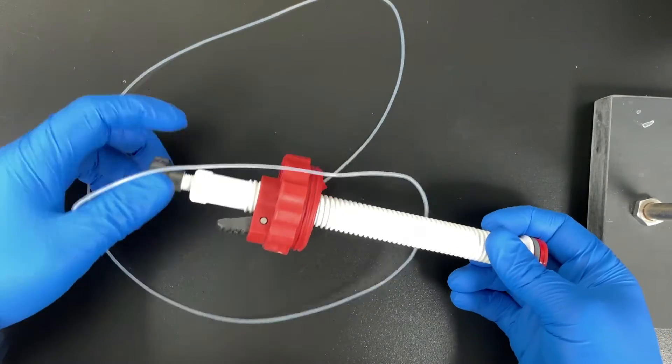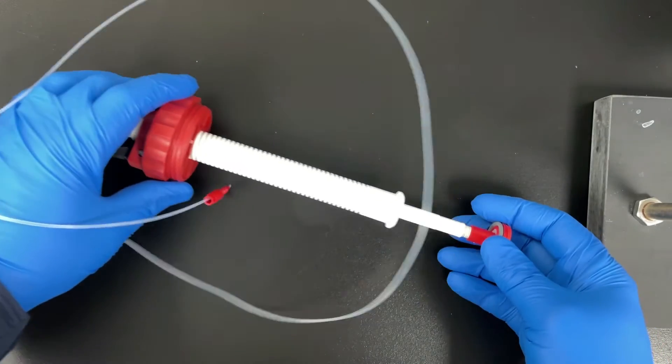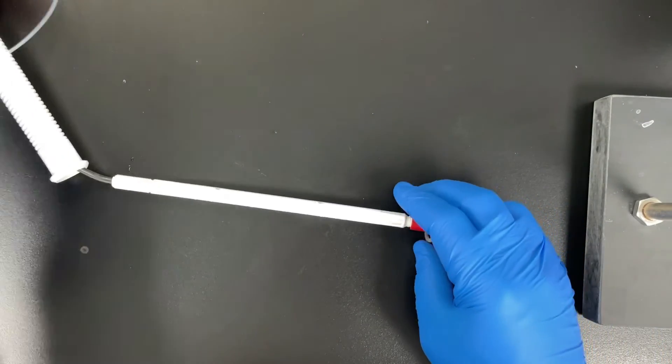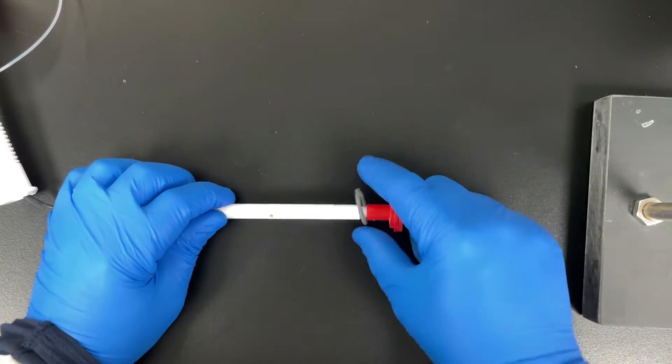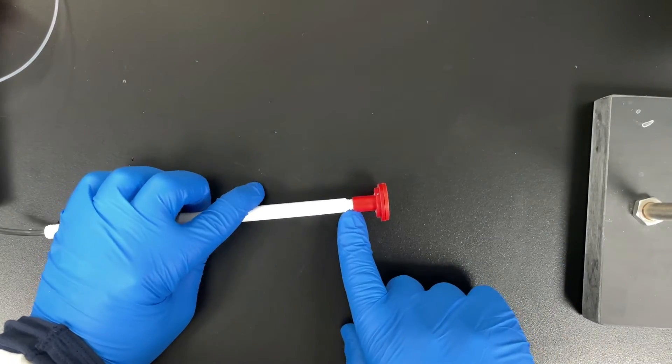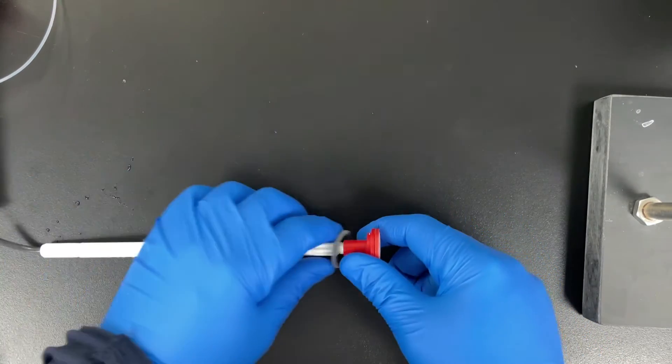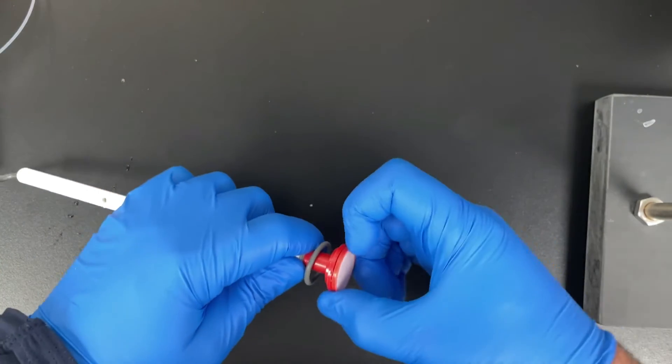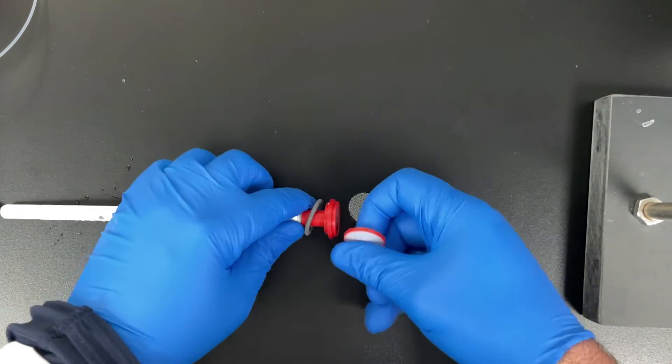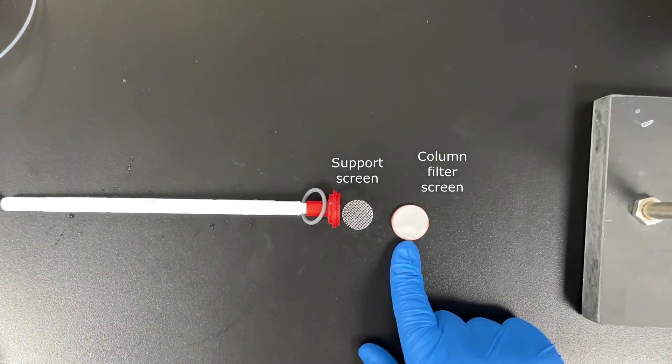We want to pull the central stem out from the middle of the column and then look at this connection here between the red distributor and the central stem. This is a very important connection. If it's not snug, it could cause leaks later. Then we're going to check the filter screen. We're going to pop it off to make sure there's no damage and that we have the support screen as well.